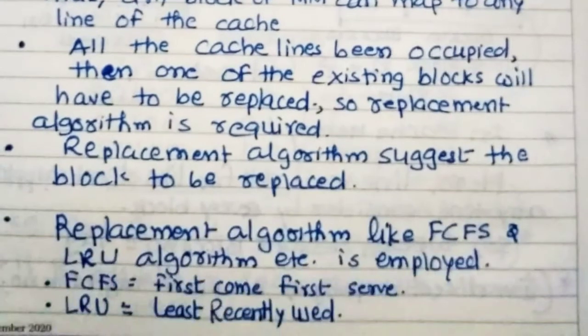Here we suggest two algorithms: FCFS and LRU. FCFS means first come first serve, and LRU means least recently used. We can understand this fully associative mapping with examples.